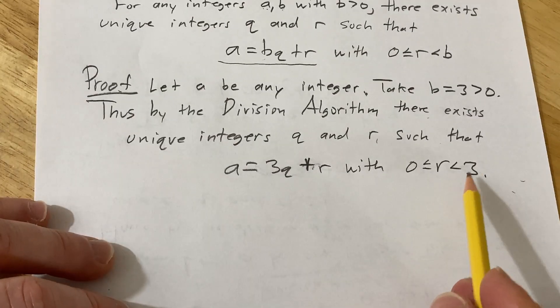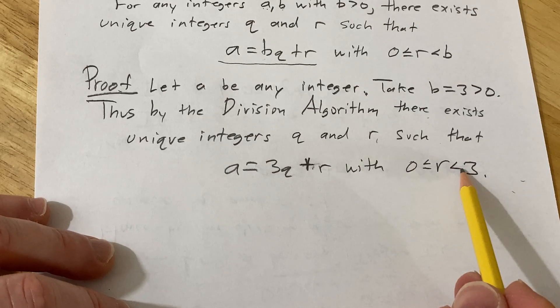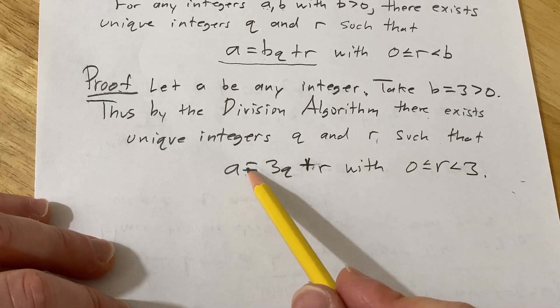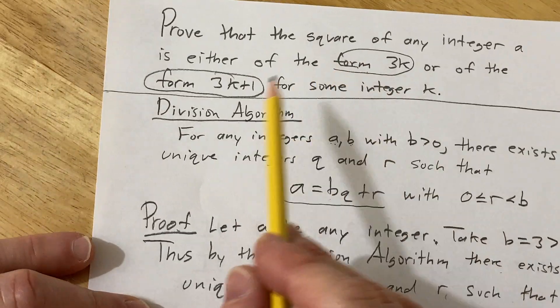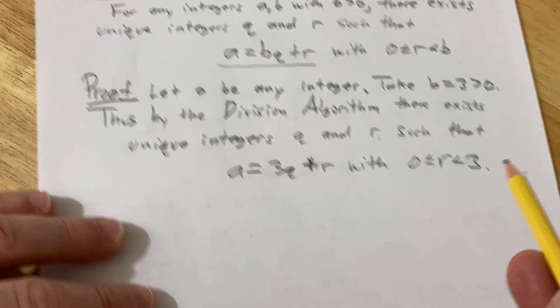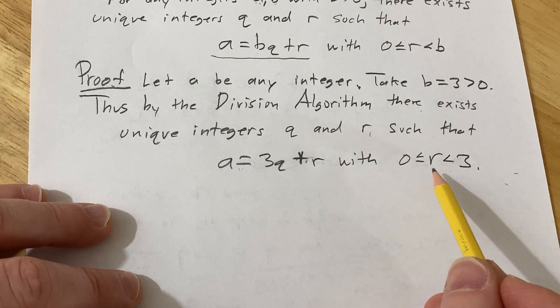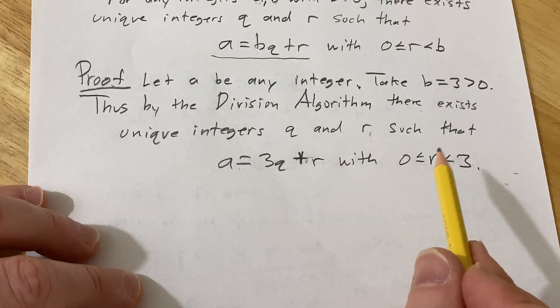This gives us a big restriction on a and we have to look at a squared and show it's of the form 3k or 3k+1. This tells us that r can only be 0, 1, or 2.